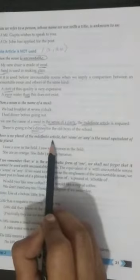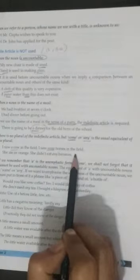For the old boys of the school. There is no plural of the indefinite article, but some or any is the usual equivalent of the plural. I saw a cow in the field. I saw some horses in the field. She ate an orange. She didn't eat any bananas.